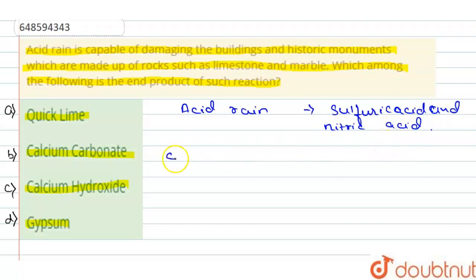Marbles and limestone - when acid rain reacts with these, it dissolves and forms what? Gypsum. The end product is gypsum.